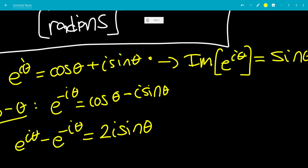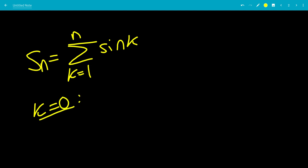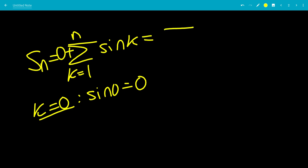So we're going to call it S of n equals the sum from k equals 1 to n of sine of k. Let's look at the k equals 0 case — sine of 0 is defined to be 0, so we can add 0 to the left side without changing anything, and combine to get the sum from k equals 0 to n of sine of k.